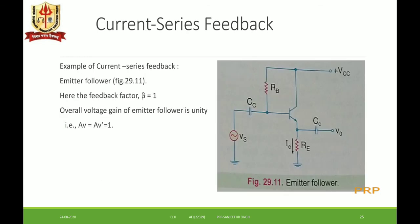An example of current series feedback is the emitter follower, where the output follows the emitter voltage. Since the output is taken from the emitter, the feedback factor β equals 1, as the output follows the emitter. The overall voltage gain of the emitter follower is unity: Af = Av' = 1.